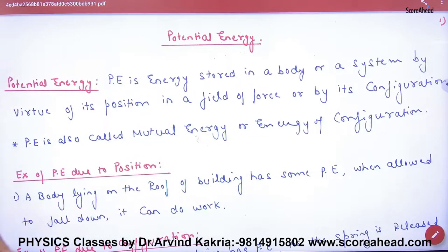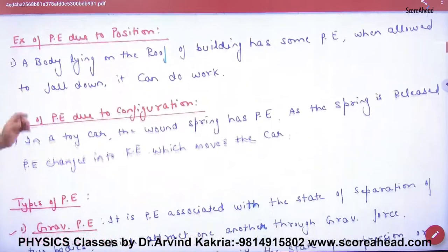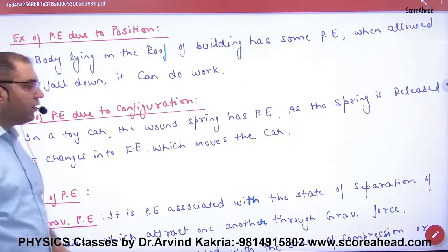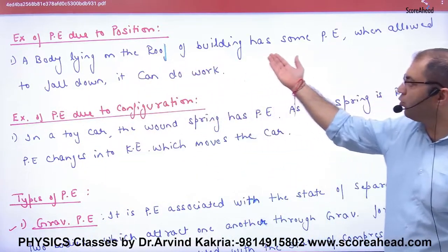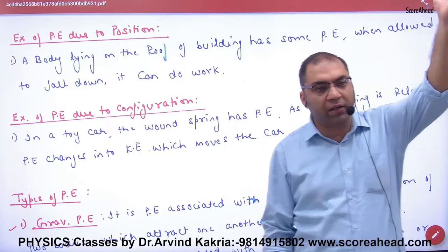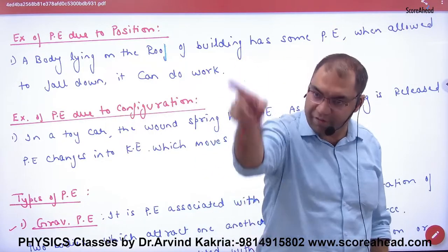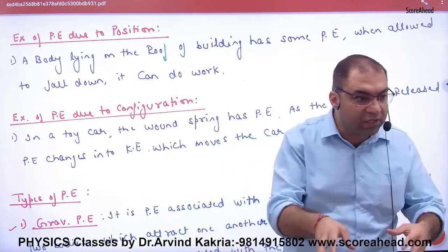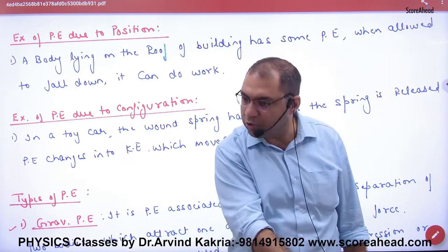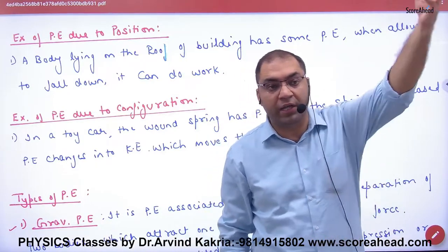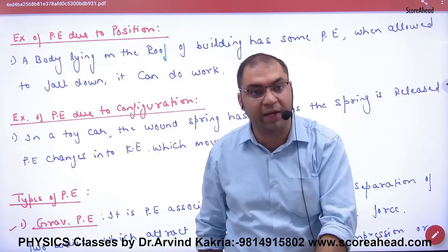Potential energy is also called mutual energy and energy of configuration. Example of potential energy due to position: a body lying on the roof of a building has some potential energy. When allowed to fall down, it can do work. You had to do work to take the stone up, that energy is stored, and when released it comes out in the form of kinetic energy.